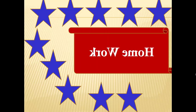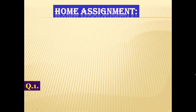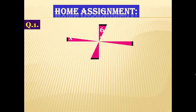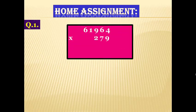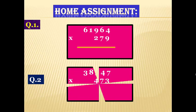It is homework time. Your home assignment is: Question 1 — Multiply 61,964 by 279. Question 2 — Multiply 38,547 by 473.